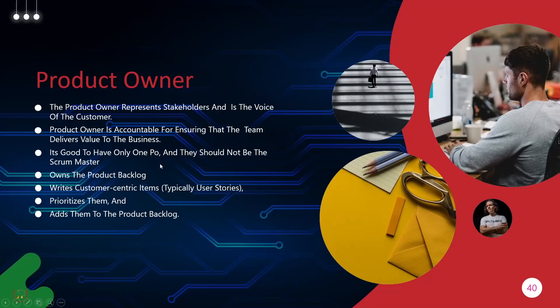You should only have one Product Owner — too many cooks spoil the broth, so don't have too many product owners. It's never good for a Scrum team. Always have a different Scrum Master and a different Product Owner; it shouldn't be the same person. The Product Owner should own the Product Backlog. They have to write user stories which are customer-centric — something that gives value to the customer. They are responsible for prioritizing the user stories in the Product Backlog.